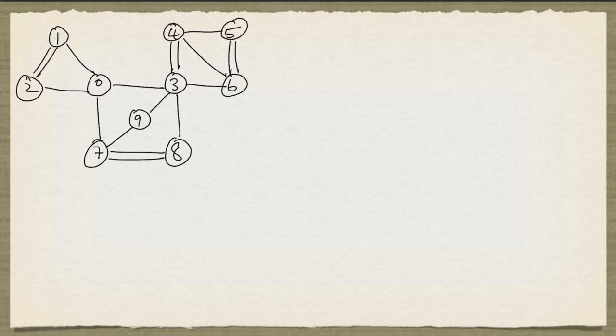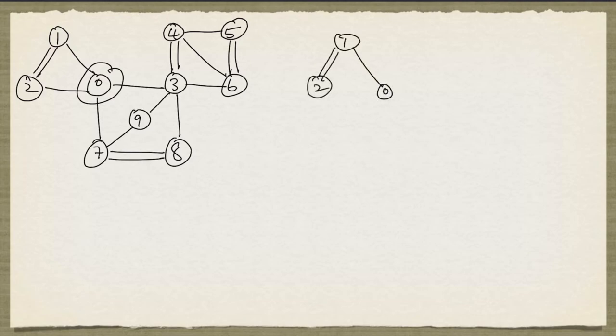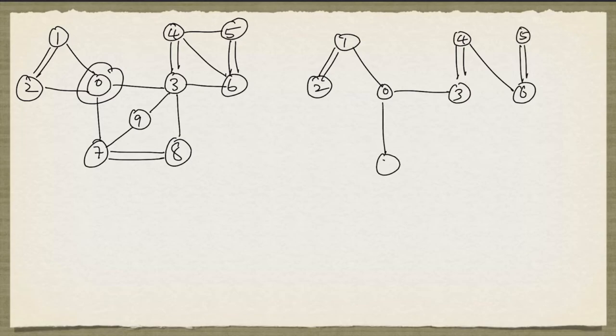We'll now look at an example where we end up with a frustrated M-alternating tree. Here's the graph — the nodes are labeled for easy reference and the matching edges are depicted by double lines. Let's build an M-alternating tree with node 0 as our root. We add this pair, then this pair, then this pair, then this pair. Now we can't find any M-augmenting path through this tree, and this tree is not frustrated because we have an edge like this one that joins two nodes in the even set.